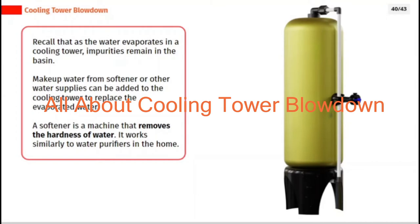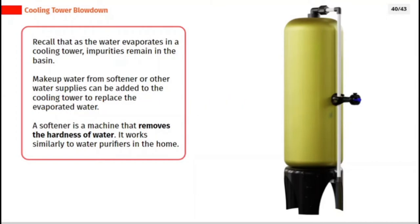Recall that as the water evaporates in a cooling tower, impurities remain in the basin. Makeup water from softener or other water supplies can be added to the cooling tower to replace the evaporated water. A softener is a machine that removes the hardness of water. It works similarly to water purifiers in the home.